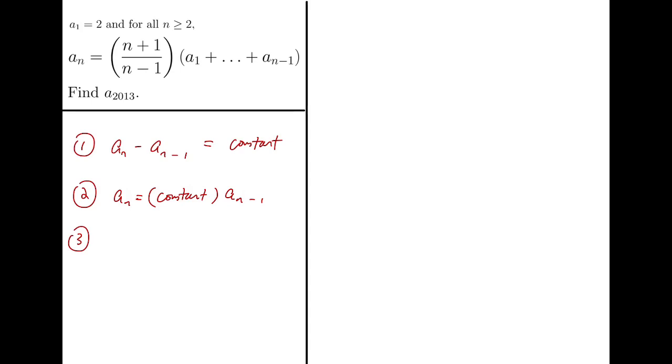Or the third type, which is actually the most common, is that a_n is the linear combination of previous terms, such as 3a_{n-1} minus 3a_{n-2} plus a_{n-3}. Okay, so these kind of linear combinations.